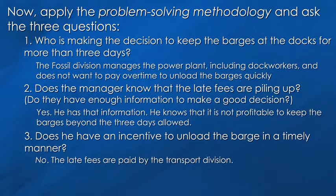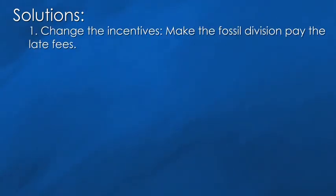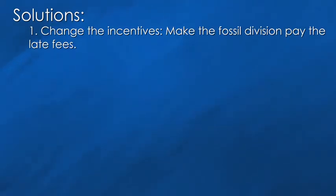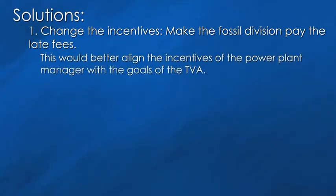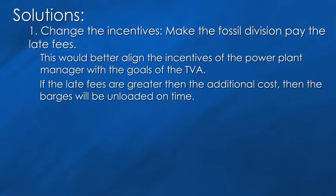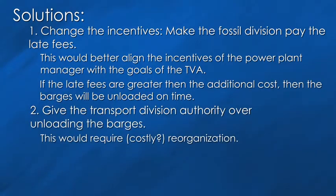So what are the solutions? There are two obvious solutions. One, you can change the incentives — keep the decision rights where they are and just make the fossil division pay the late fees. They're the ones who decide whether or not to unload the barges in a timely manner; you want to make sure they face the benefits and costs of their decision. After you make that change, the incentives of the fossil division would be better aligned with the goals of TVA. If the late fees were more than the cost of overtime to unload the barges in a timely manner, the managers would have an incentive. The other obvious solution is to let somebody else make the decision — because the transport division pays the late fees, you could let them decide whether or not to unload the coal.